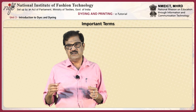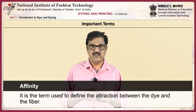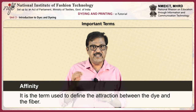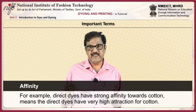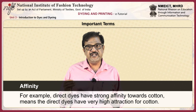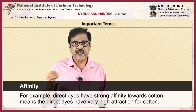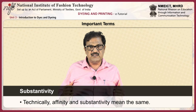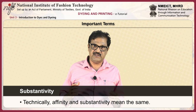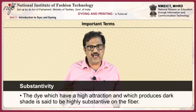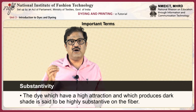Let us review some terms commonly used in the dyeing process. Affinity: it is the term used to define the attraction between the dye and the fiber. For example, direct dyes have strong affinity towards cotton, meaning the direct dye has very high attraction for cotton. Substantivity: technically, affinity and substantivity mean the same thing. The dye which has a high attraction and which produces a deep shade is said to be highly substantive on the fiber.